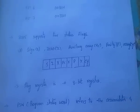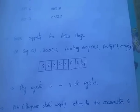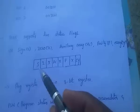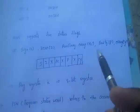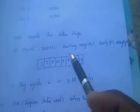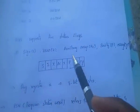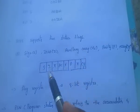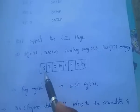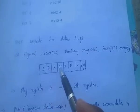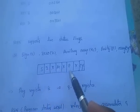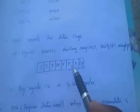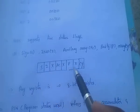The 8085 supports 5 status flags. The flag register is an 8-bit register containing the following 5 status flags: Sign, Zero, Auxiliary Carry, Parity, and Carry.